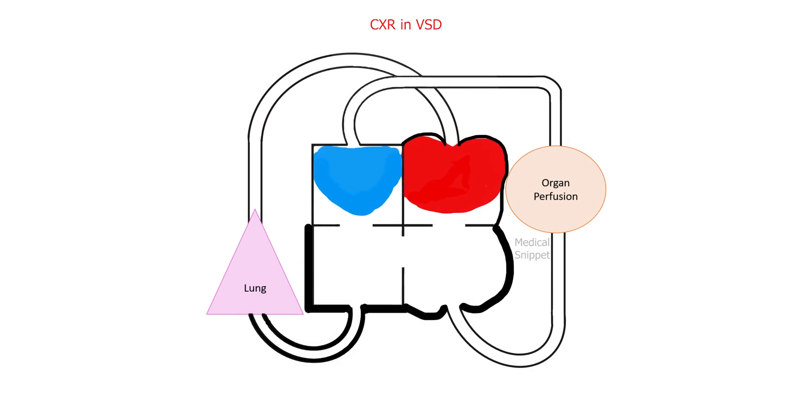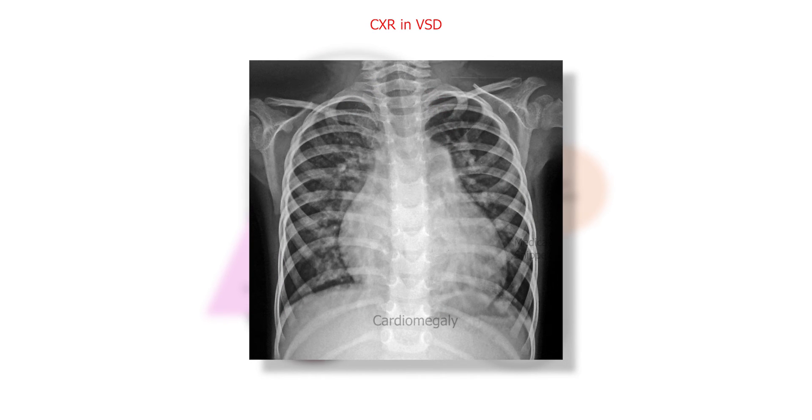Let's see the chest X-ray in VSD. In small VSD, the chest X-ray is usually normal. In moderate to large VSD, there is cardiomegaly. Left atrium is enlarged. Left ventricle is dilated and it forms the apex. There is prominent pulmonary artery with increased pulmonary vascular markings.